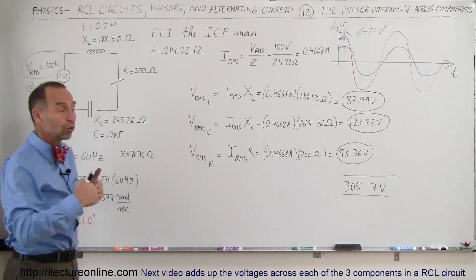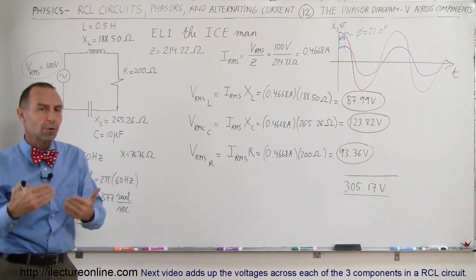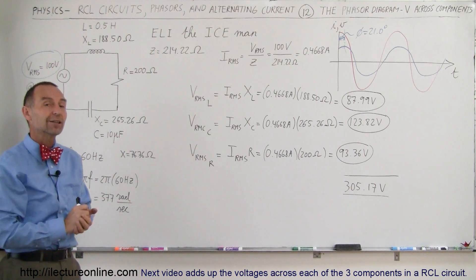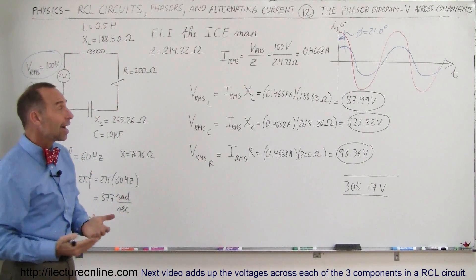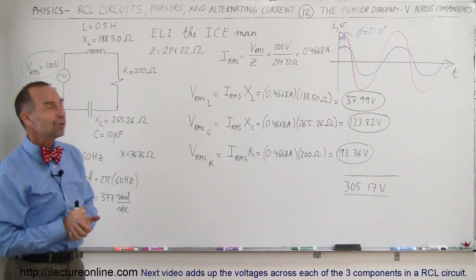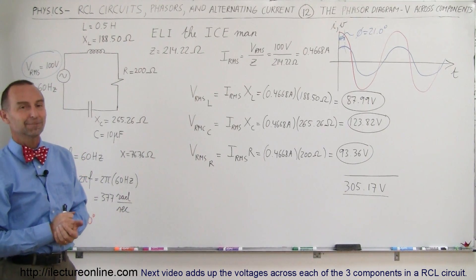So in the next video, we'll show you how to add up the voltages appropriately so that they will add up to the expected value of 100 volts by taking into account the phase differences between these three components.